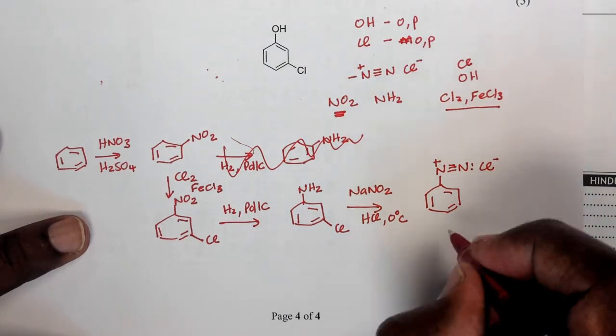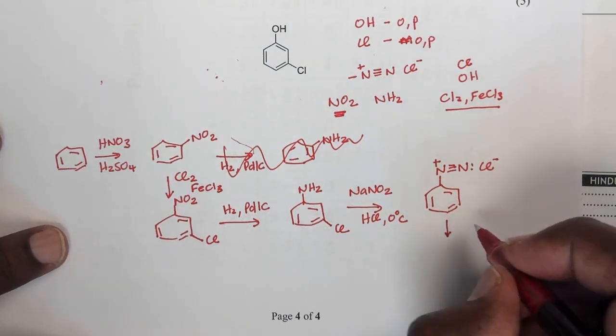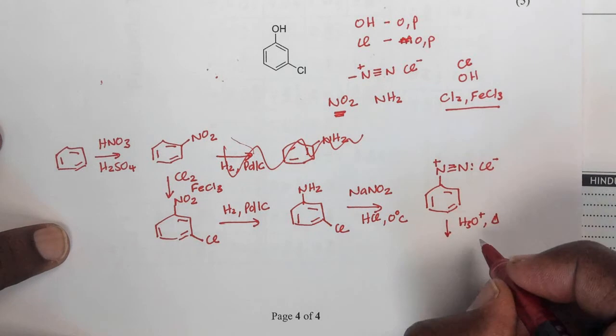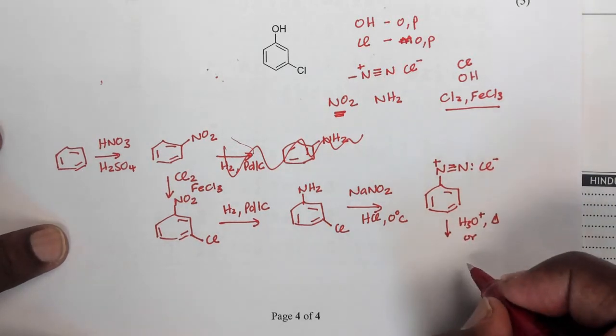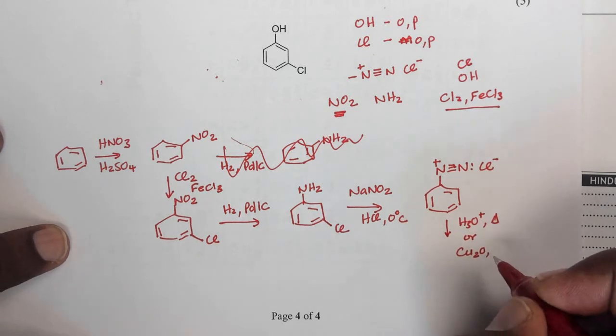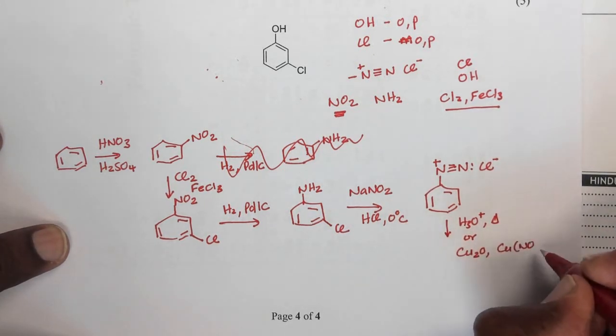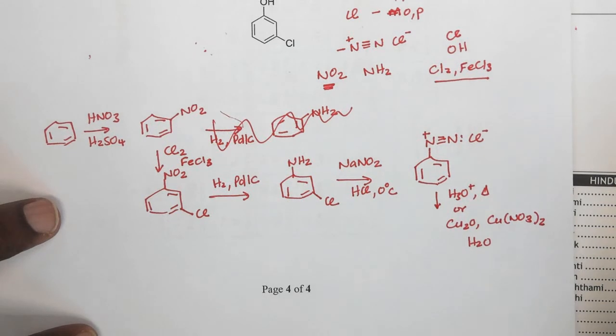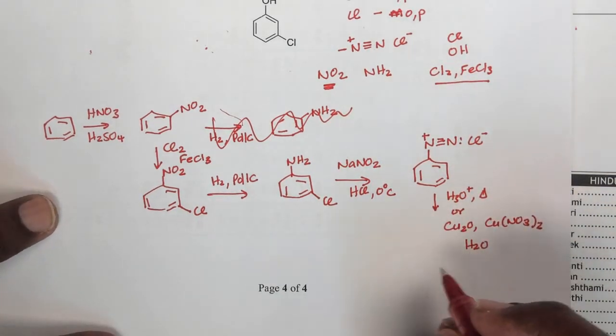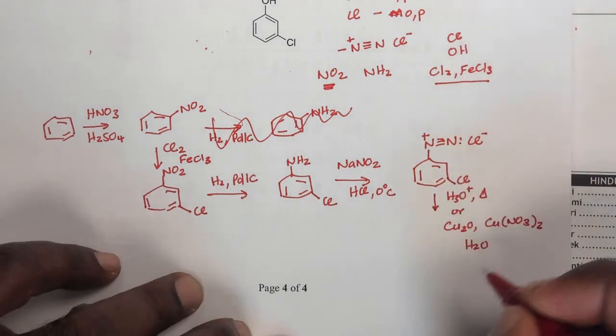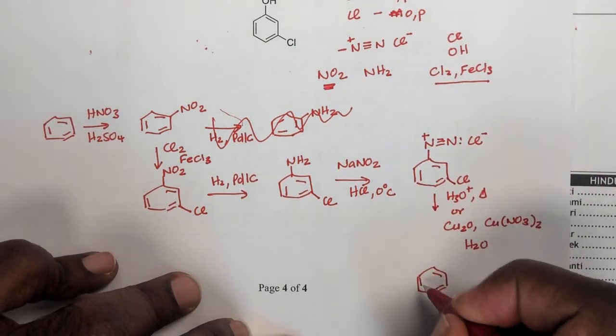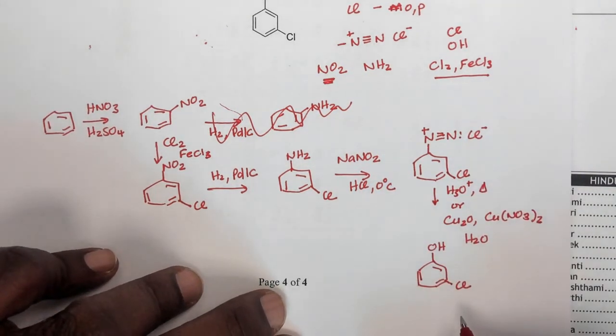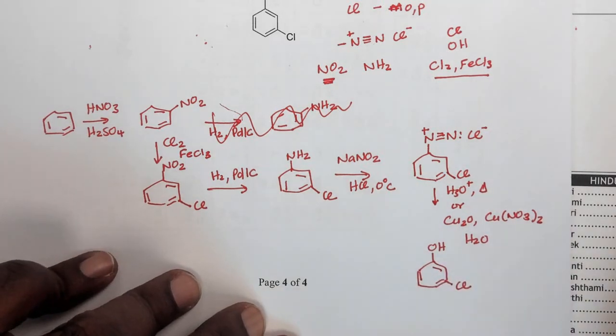And once I get that diazonium salt, I can easily convert that to the hydroxy, either by using acid and some heat, or specialized reagents like cuprous oxide, Cu2O, copper nitrate, and water. And once I use these reagents, any one of these two, I would have achieved my synthesis to put an OH group and a chloro group positioned meta to each other. So, this is basically the design to make it.